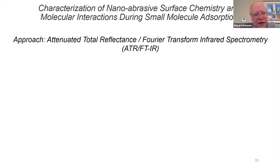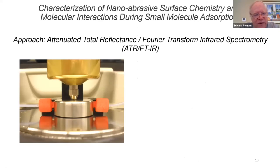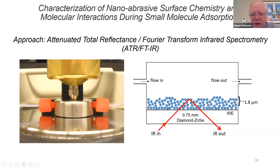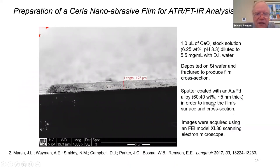We need another technique to really understand what's happening at the surface of these particles when they come in contact with small molecules that could bind to their surface. The technique we used is attenuated total reflectance ATR-FTIR, which allows us to study the adsorption of molecules flowing into a flow cell in an FTIR instrument operated in attenuated total reflectance mode to see adsorption on a film. This setup allows us to investigate spectroscopy in roughly a two-micron film thickness. We've successfully created films with ceria, alumina, silica, and zirconia.